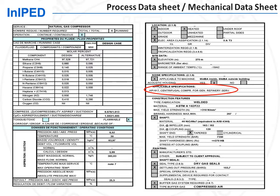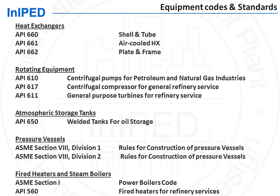One of the most important pieces of information is the applicable design and construction code. Oil and gas facilities equipment are almost always specified to comply with an industry code from the American Petroleum Institute, API. For example, in the case of a turbo compressor mechanical data sheet, it is specified to comply with API 617. There are such codes for all types of equipment, containing prescriptions for the design, manufacturing, inspection, and testing of equipment to ensure a long and uninterrupted service life.